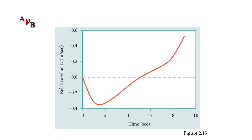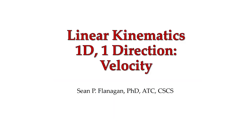Looking at a graph of runner B's velocity relative to runner A: first runner B has a negative relative velocity, meaning runner A is going faster. Then about halfway through the race, B has a positive relative velocity, meaning B is now going faster than A. But don't assume B won the race just because B is going faster at the end — A may have gotten so far ahead that B never catches up before the race ends. Those are the key ideas relative to velocity. Next up, we'll talk about acceleration.